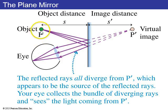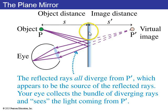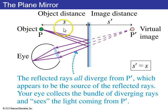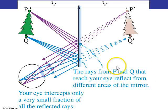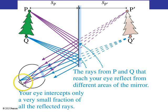For image formation in a mirror, if you have an object P and rays reflect specularly off the surface of a plane mirror, your eye imagines these rays are coming from a point beyond the mirror — this is called a virtual image. Your eye imagines the light is actually coming from point P'. The distance from P' to the mirror surface, S', equals the distance of the actual object from the plane mirror, S. Your eye intercepts only a small fraction of the reflected rays, and when they come from different parts of the object, those points are imaged onto different parts of your retina.